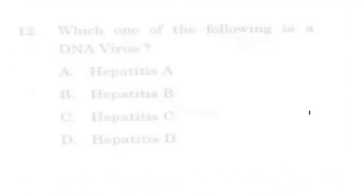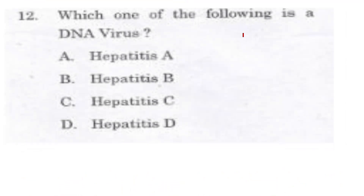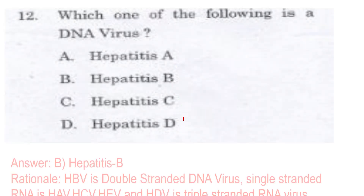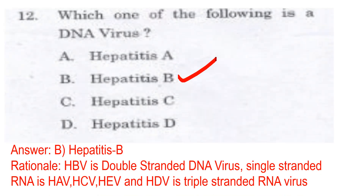Question 12: Which one of the following is a DNA virus? Option A is Hepatitis A virus, Option B is Hepatitis B virus, Option C is Hepatitis C virus, Option D is Hepatitis D virus. The answer is Hepatitis B virus — Option B.